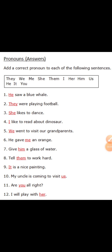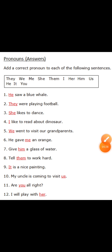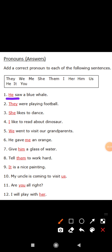Some more examples of pronoun. Add a correct pronoun to each of the following sentences. 'He saw a blue whale.' Here 'he' is a pronoun — instead of saying 'Ram saw a blue whale' where Ram is a noun, we use 'he'. So 'he' is a pronoun.